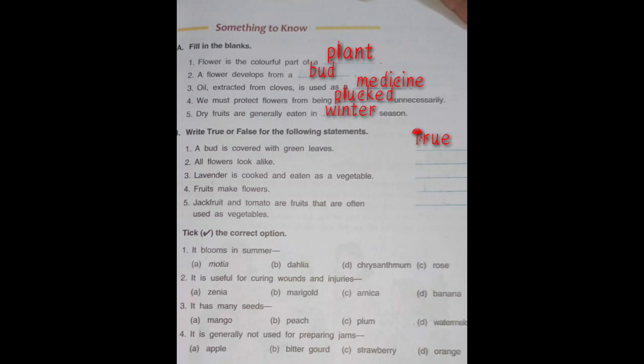Number two: All flowers look alike. Do all flowers look the same? Marigold is different from rose, rose is different from jasmine, jasmine is different from sada bahar — so all flowers are different from each other. This is false; all flowers do not look alike.